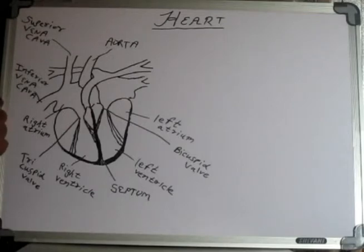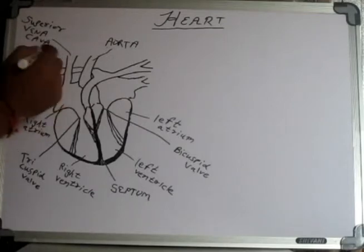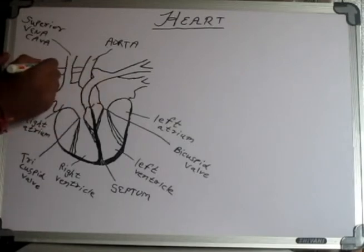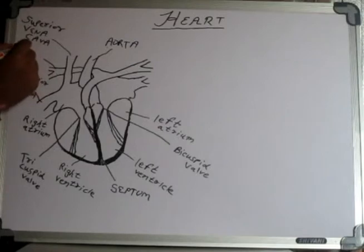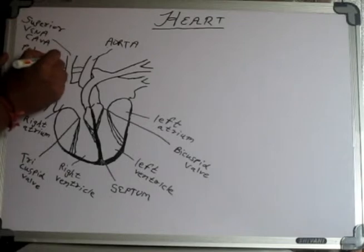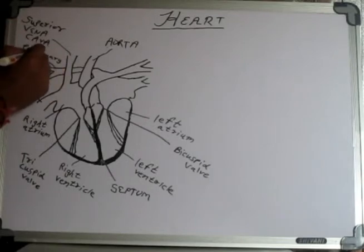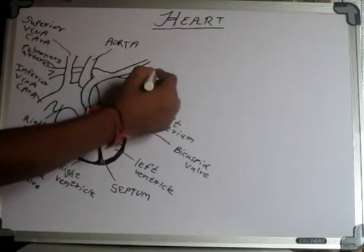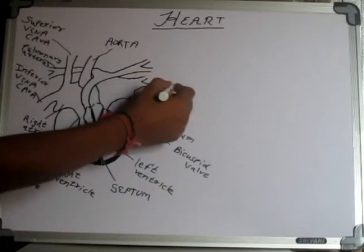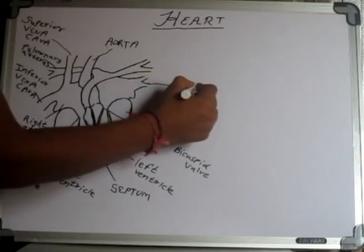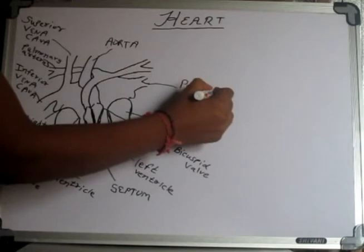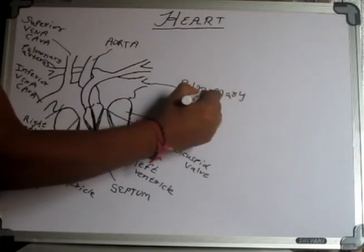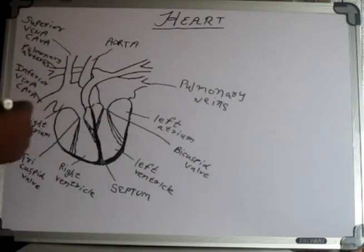These are called the pulmonary arteries. The pulmonary arteries carry deoxygenated blood. And these are called pulmonary veins, which carry oxygenated blood to the left ventricle. So pulmonary arteries carry deoxygenated blood and pulmonary veins carry oxygenated blood — this is an exception that I will discuss later on in the next video.